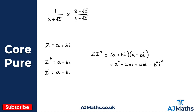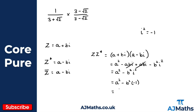Now simplifying: we have a squared, then minus abi plus abi cancel. We're left with minus b squared i squared. Since i squared equals minus one, minus b squared times minus one gives plus b squared. So z times z* simplifies to a squared plus b squared.